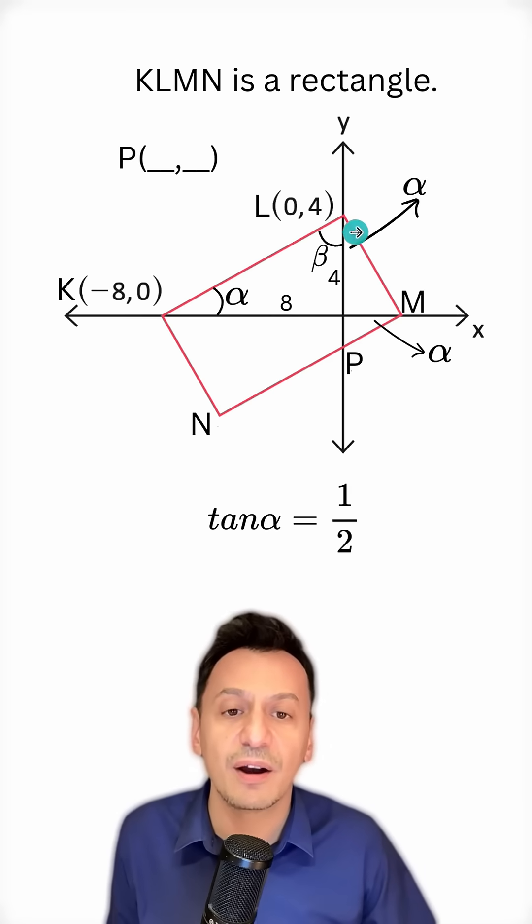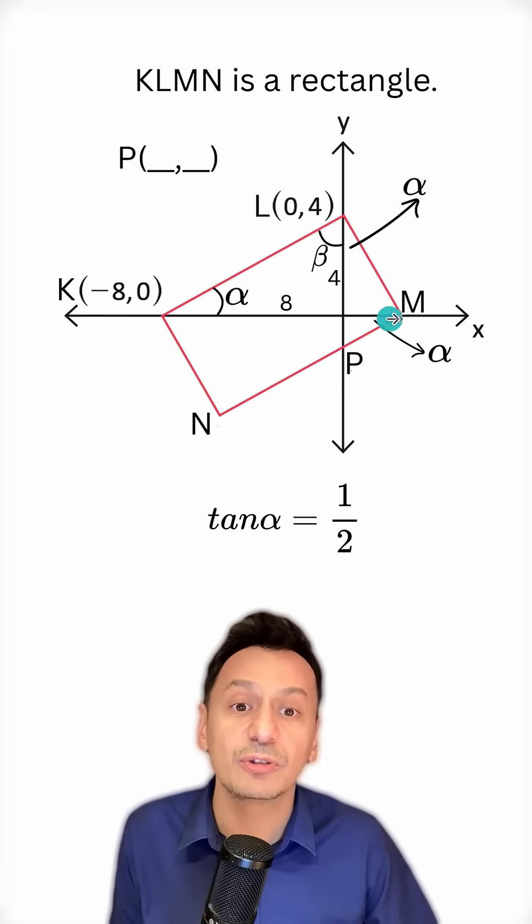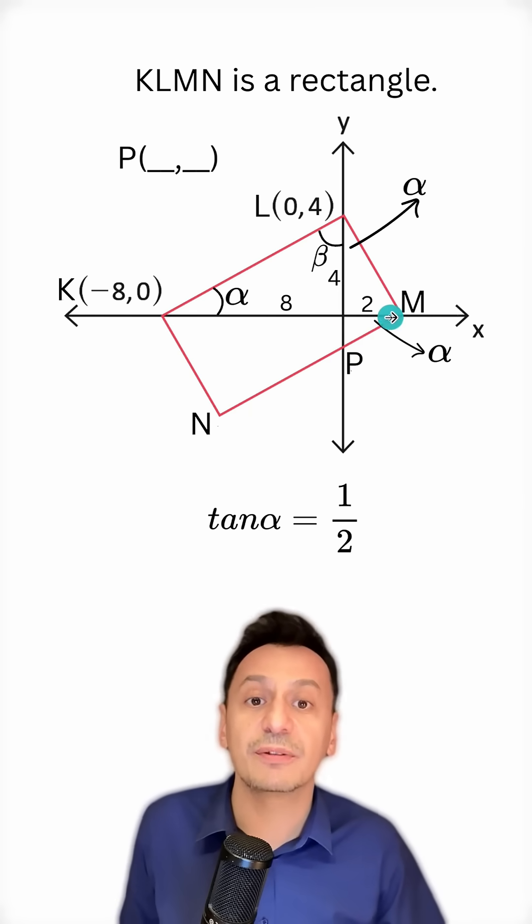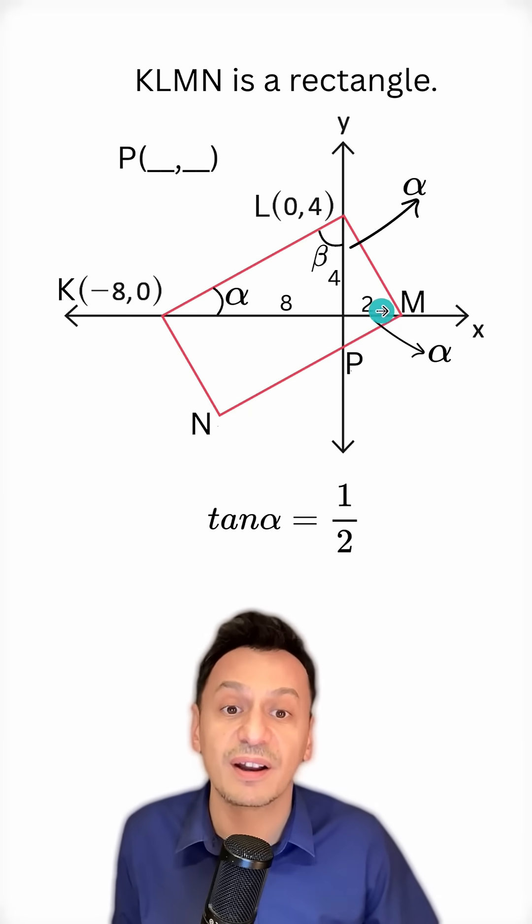So since the side opposite alpha here will be half the length of its adjacent side, I can write 2 here. Because half of 4 is 2. Now I'm looking at the small triangle here. Since the side opposite alpha will be half the length of its adjacent side, I can write half of 2, which is 1, opposite it.